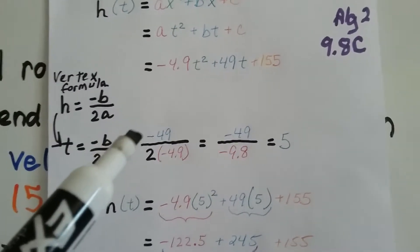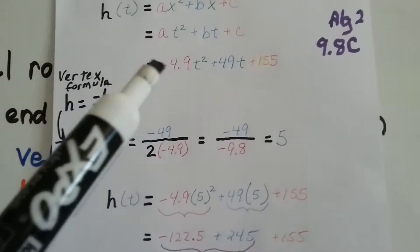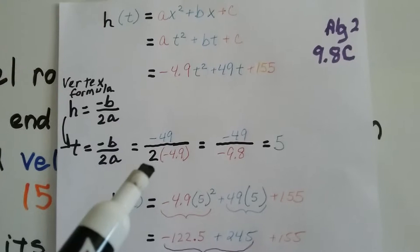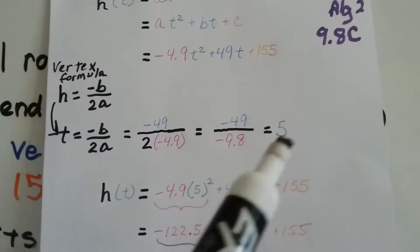The 49 value is going to be a negative 49 for our negative b, and a is a negative 4.9, so we're going to multiply it by 2. When we divide this, we get a 5. So 5 is going to be our t value.